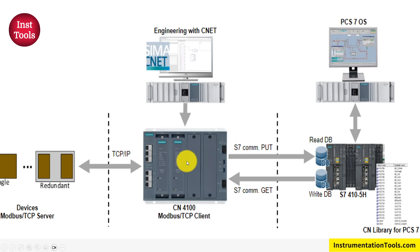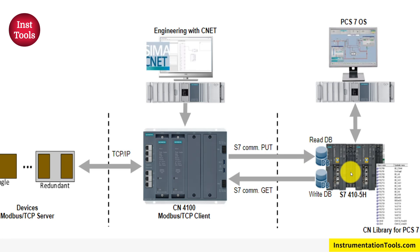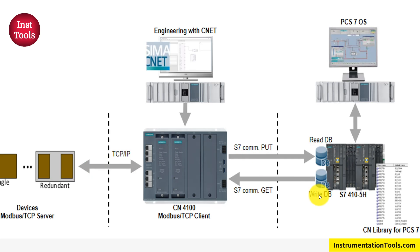From CN400, there is a direct ProfiNet connection to the S7-400 or S7-410 AS station. Some data blocks (DBs) in the S7-410 are allocated to hold the Modbus data. We use S7-PUT and GET instructions, which are popular instructions when dealing with Modbus devices in the CFC editor or when programming the S7-410. Those data blocks are then directly shown in our OS station.